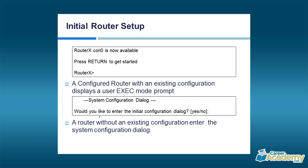When you make the initial connection to the router after startup, if it has a startup configuration, that's going to become the running configuration. But if there is no existing configuration, you're going to get into what we call the setup — a text-based wizard called the initial configuration dialog. That's going to take you through a number of questions so you can do the basic configurations without even needing to know what the command lines are.